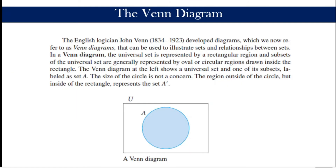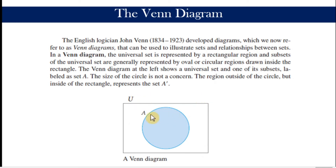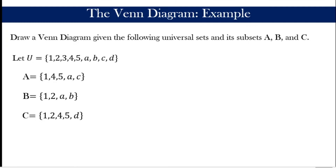Let us proceed to Venn diagrams. A Venn diagram is a visual representation of sets, subsets, or their relationships. It was developed by the English logician John Venn. To use the Venn diagram, we draw a rectangular region to represent the universal set, and inside it we draw ovals or circles to represent subsets.